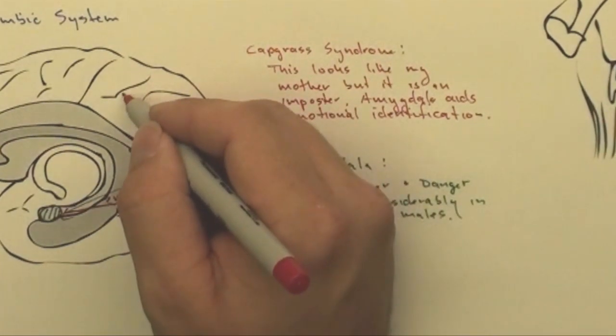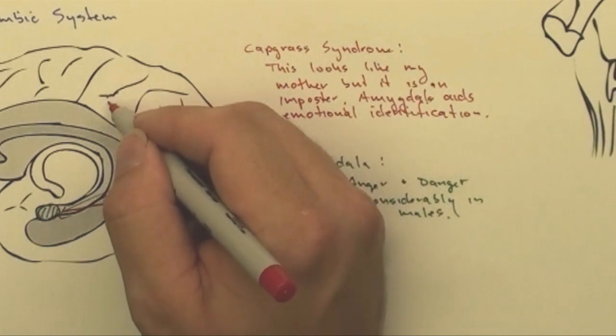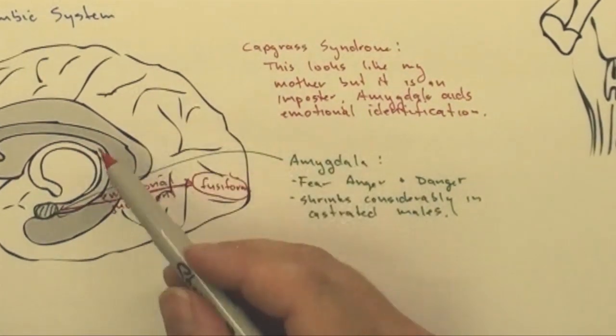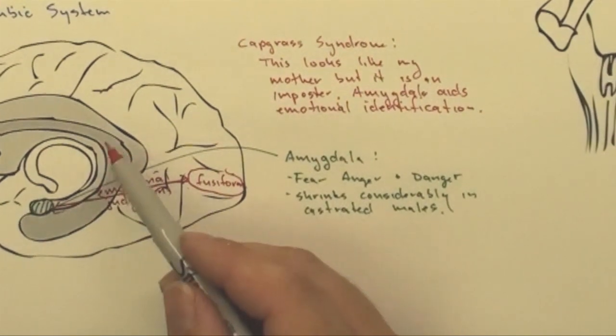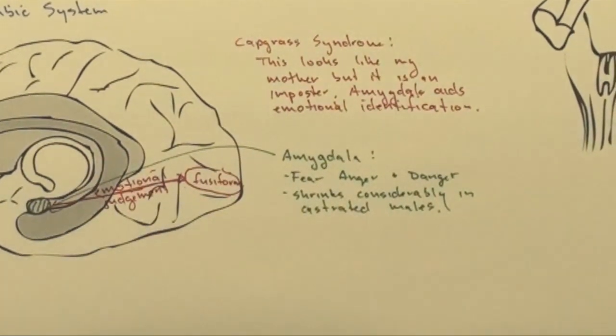Interestingly, if the input came from auditory cortex, which is not really easy to draw on here, but auditory cortex, he might be able to recognize his mom's voice because then the connection still exists with the amygdala.